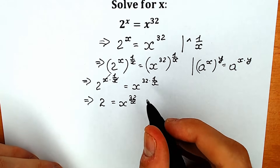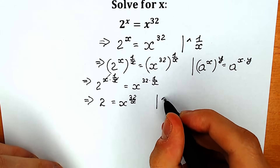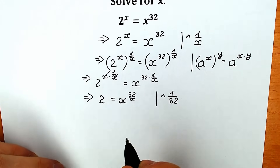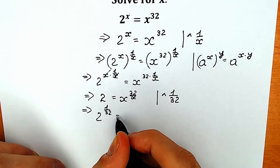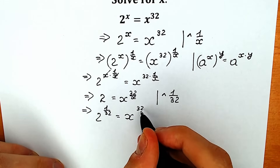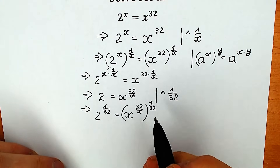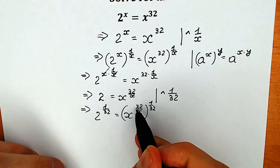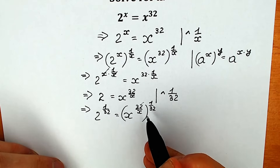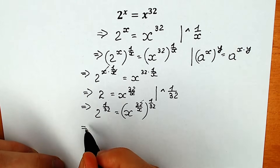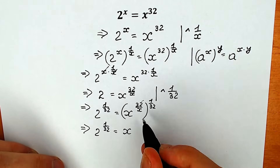Now let's raise both sides to the power 1 over 32. We want to group our constant on the left side and variables on the right side. We get 2 to the power 1 over 32 equal to x to the power 32 over x, raised to the power 1 over 32. Multiplying those powers, the 32 in the numerator and the 32 in the denominator cancel, leaving x to the power 1 over x. So we have 2 to the power 1 over 32 equal to x to the power 1 over x.